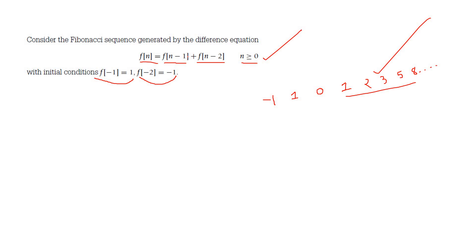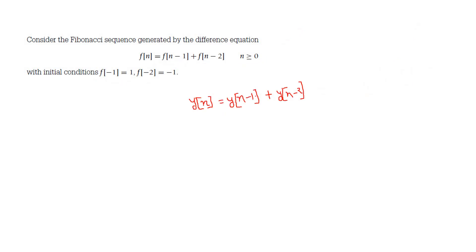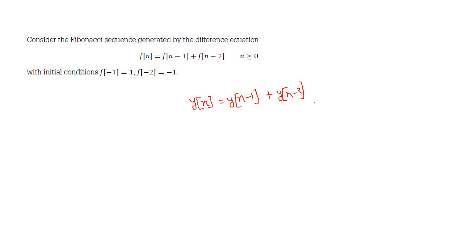Now, how can we do this using Z-transformation? It is very simple — take Z-transformation on both sides. I am using Y here since this is a transfer function system. The system difference equation is y(n) = y(n-1) + y(n-2). Taking Z-transformation with initial conditions, we get: Y(z) = Y(z)·z⁻¹ + y(-1) + Y(z)·z⁻² + y(-1)·z⁻¹ + y(-2).